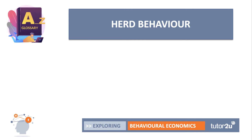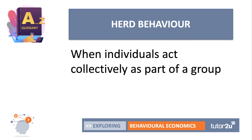Herd behaviour. We see a lot of herd behaviour in lots of aspects. Herd behaviour in particular is where individuals act collectively as part of a group and often take decisions as a group that they wouldn't necessarily take as an individual. We might see it in the choice of a group to go to a particular concert, festival, or holiday. In financial markets, a new stock or company comes on the scene, people start jumping onto that stock and others follow. If the stock goes up, you share in the success; if it goes down, you share in the failure.